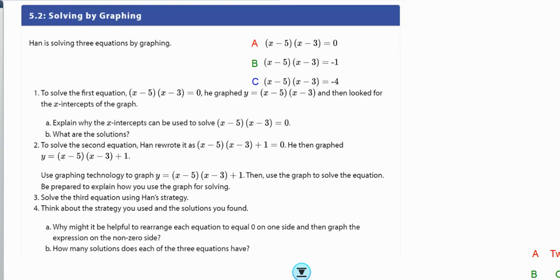So we are on 5.2, Solve by graphing. Han is solving three different equations by graphing. I decided to label them A, B, and C so we can talk about them. To solve the first equation, (x - 5)(x - 3) = 0, he chose to graph y = (x - 5)(x - 3). And then he looked for the x-intercepts of the graph.